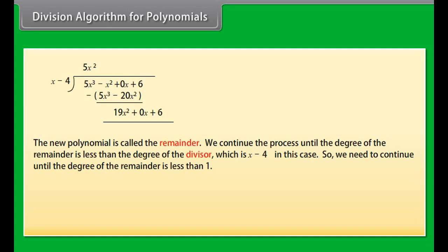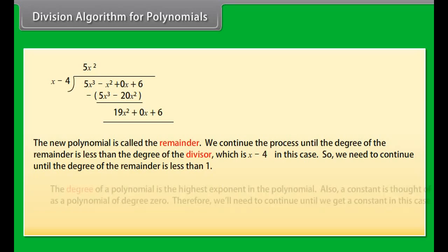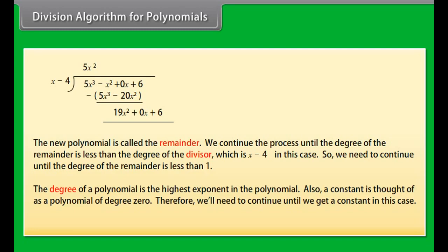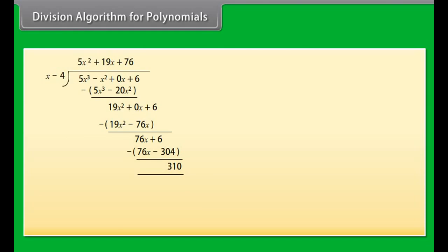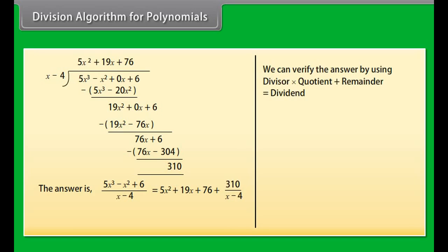Let's divide 5x³ − x² + 6 by x − 4. First, set up the problem with terms written in decreasing order of exponents, and add in any missing terms with a zero coefficient. We multiply x − 4 to get the first term; that is 5x², so multiply x − 4 by 5x² and subtract the results. We continue the process until the degree of the remainder is less than the degree of the divisor, x − 4, meaning we continue until we get a constant.